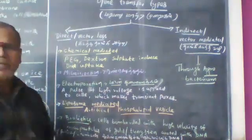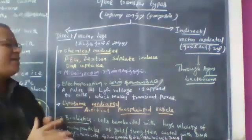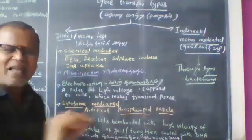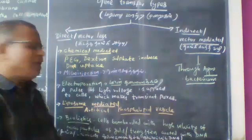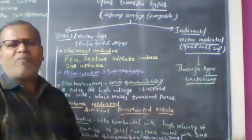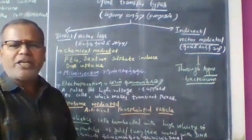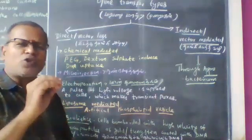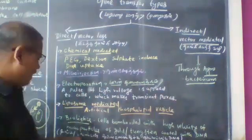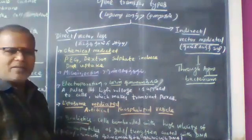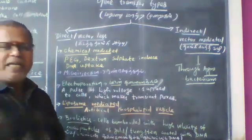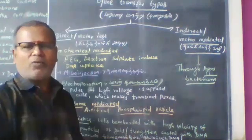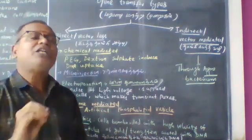The direct methods include: first, the chemical method; second, microinjection; third, electroporation — where with the help of electricity we introduce the foreign gene into the cell; fourth, liposome-mediated; and finally, biolistics. In these methodologies, a gene of interest is introduced into a bacterial cell, a plant cell, or an animal cell.